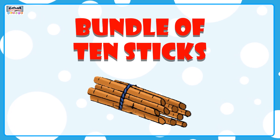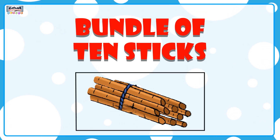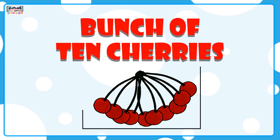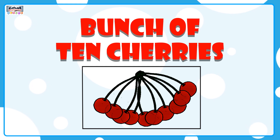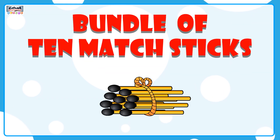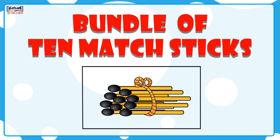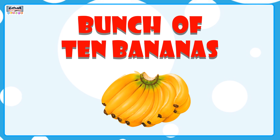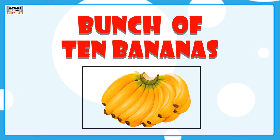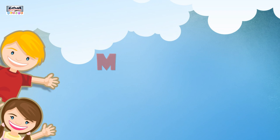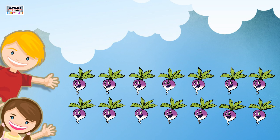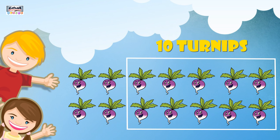There is a bundle of 10 sticks. There is a bunch of 10 cherries. There is a bundle of 10 matchsticks. There is a bunch of 10 bananas. Make a group of 10: 10 turnips.